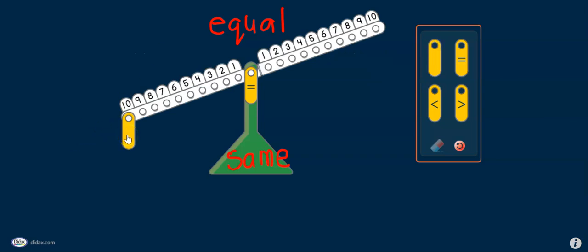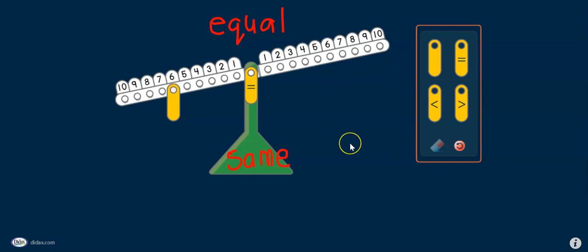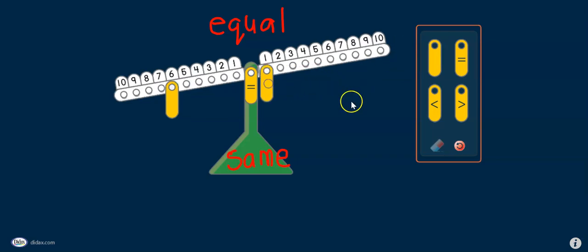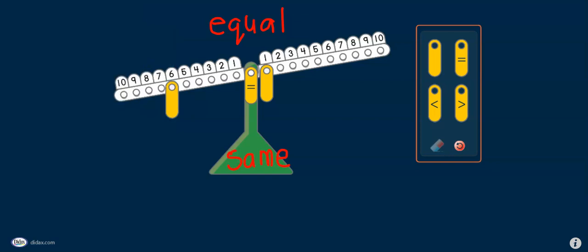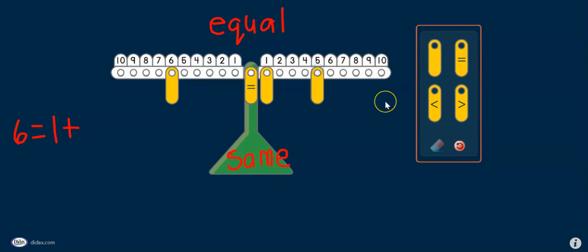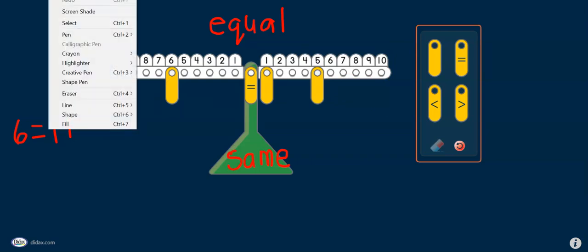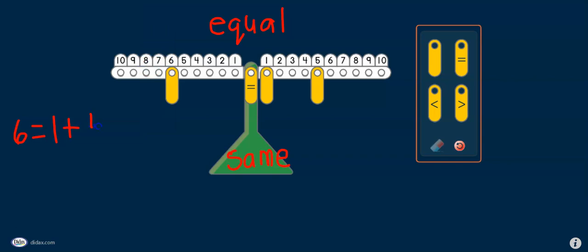So today we're going to explore the number 6. So if I have 6 and I have 1, how many more do I need to make it equal? Let's write this equation. That's right. I need 5 more to make it equal to balance my scale.